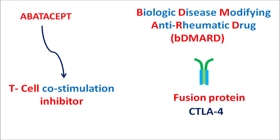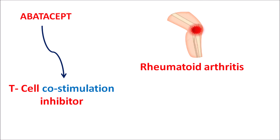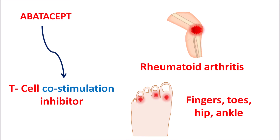Abatacept can modify immunity so that it can reduce autoimmune disorders such as rheumatoid arthritis. That's why this drug is indicated for the treatment of rheumatoid arthritis, which is an autoimmune disorder associated with excessive T-cell activity leading to inflammation within the joints. This can affect fingers, toes, hip, and ankle.